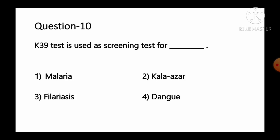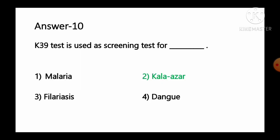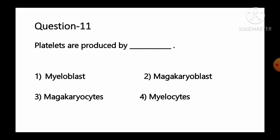Question number 10: K39 test is used as a screening test for — option 1 malaria, option 2 kala-azar, option 3 filariasis, option 4 dengue. The most common serological tests used in the diagnosis of kala-azar are the direct agglutination test (DAT) and the recombinant K39 test or dipstick test. This test indicates the presence of antibodies against Leishmania. So option number 2, kala-azar, is the correct answer.